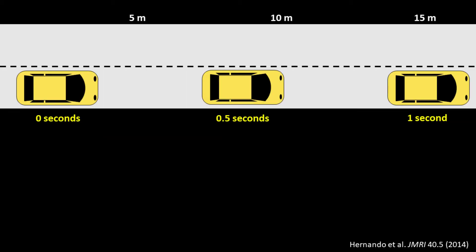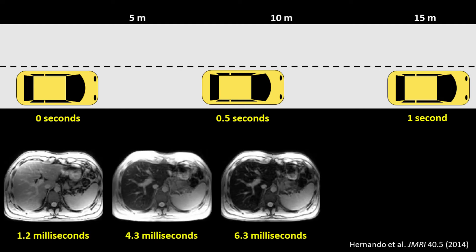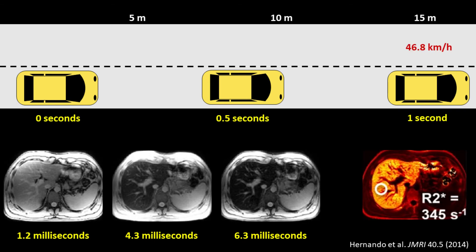It's important to note here that the position of the cars and the MRI intensities depend on the exact time these pictures were taken. The speed of the cars and the R2 star map don't. These are inherent properties of the cars and the liver tissue.